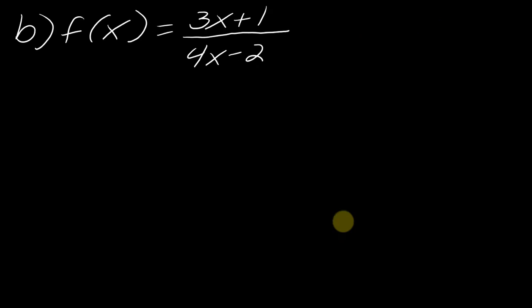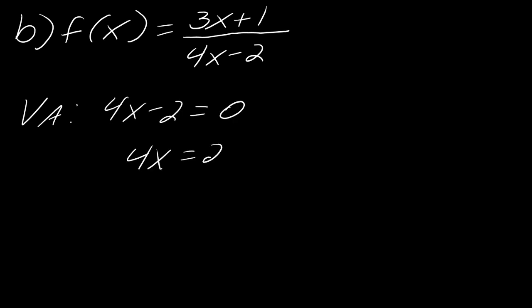Let's do another example. Pause the video and try to find the vertical asymptote — set the denominator equal to 0 and solve. For the vertical asymptote, I take 4x minus 2, set it equal to 0, add 2 to both sides, and divide by 4. I get x equals 1/2. That is my vertical asymptote.